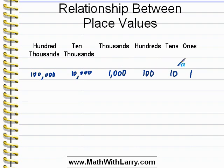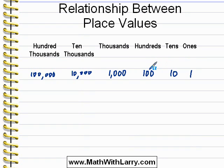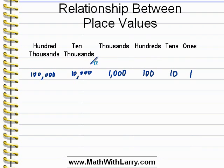We can also skip more than one place. For example, one hundred is two places to the left of the ones, so it is a hundred times as big. So if we go from the hundreds to the ten thousands, since we're skipping two places, we can say that ten thousand is a hundred times as big as a hundred.